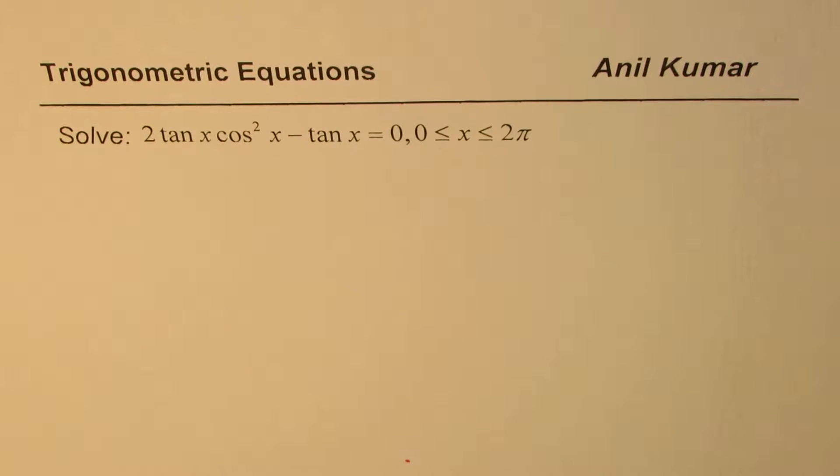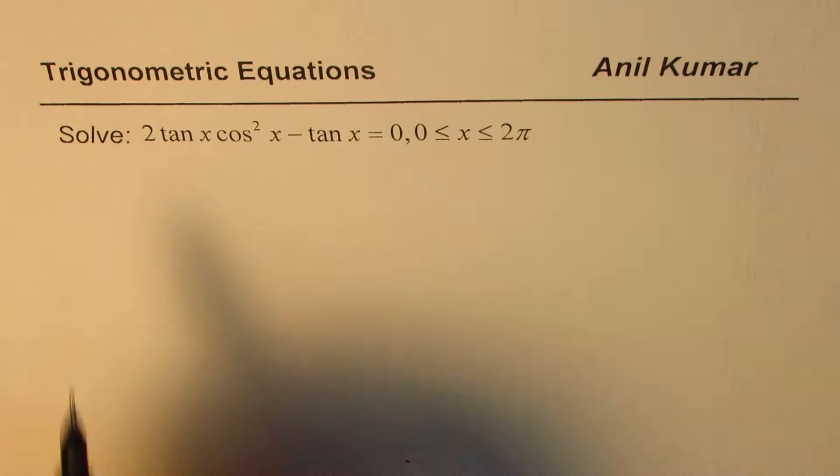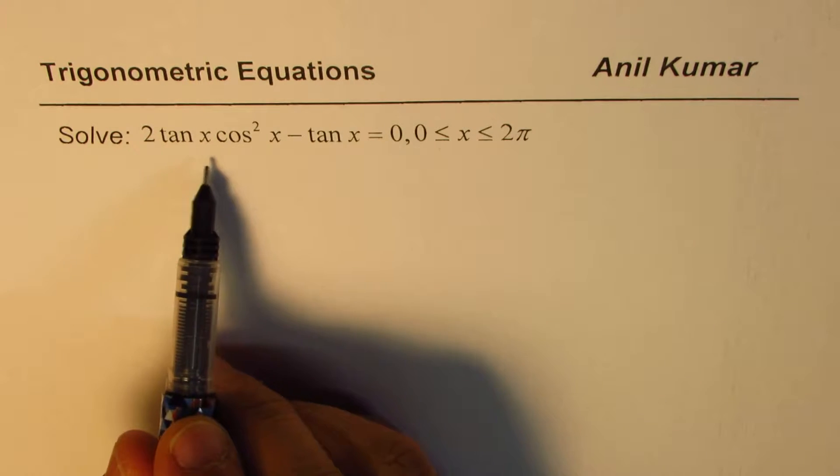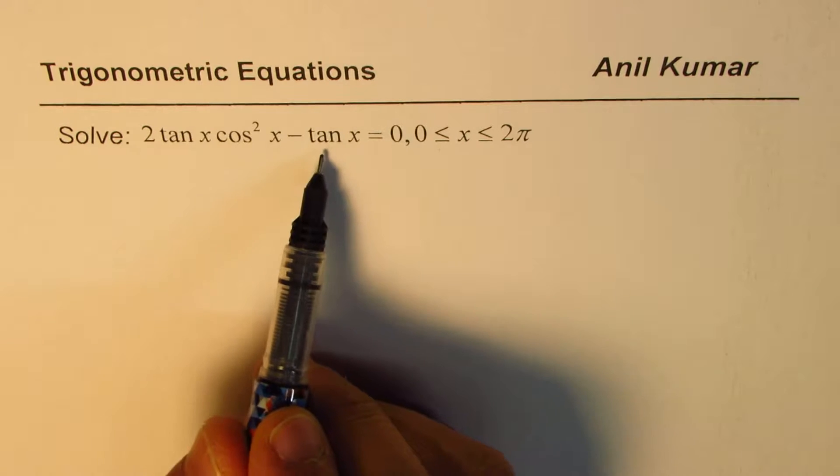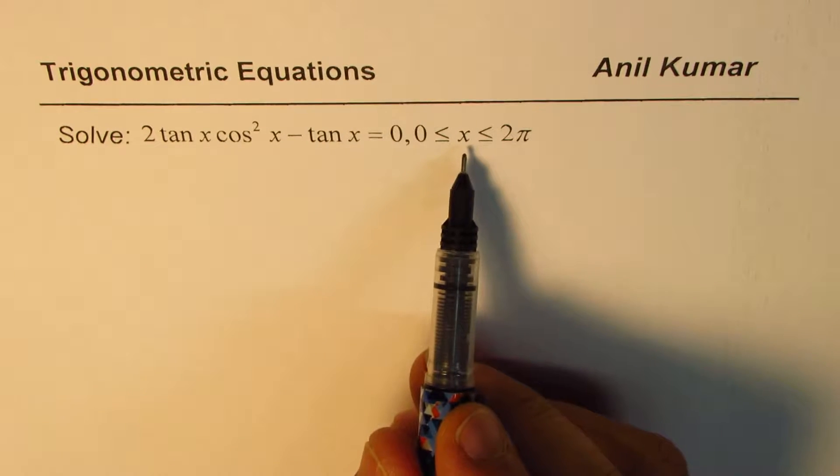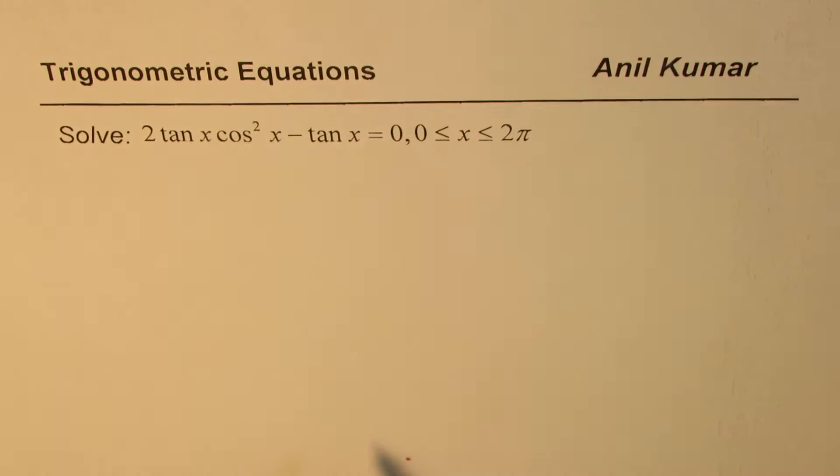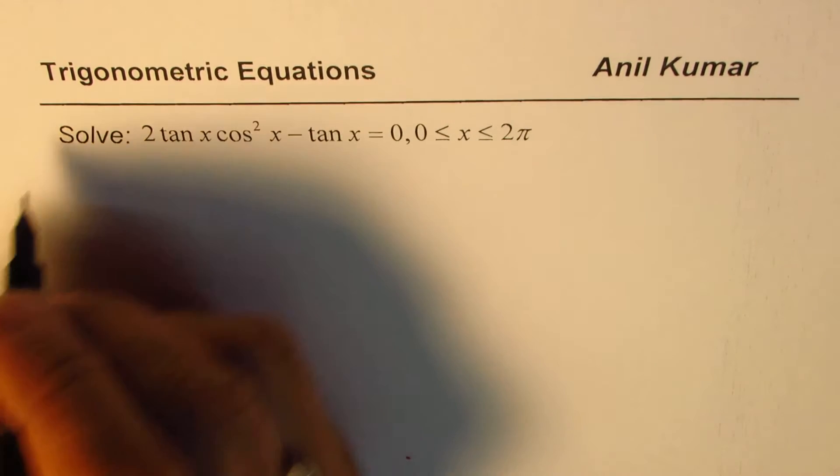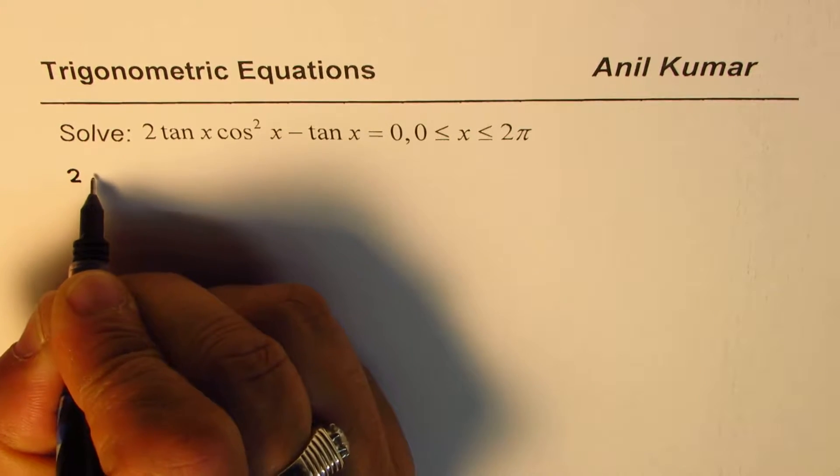I'm Anil Kumar and here is a very interesting trigonometry equation to solve. The question is: solve 2 tan x cos²x minus tan x equals 0, where x is between 0 to 2π. You can always pause the video, answer the question, and then look into my suggestions.